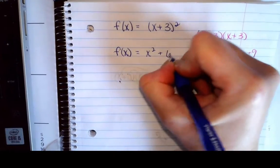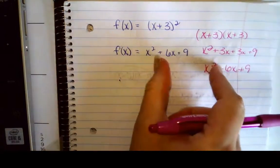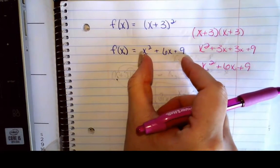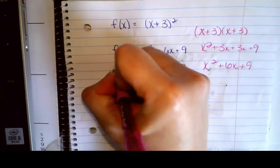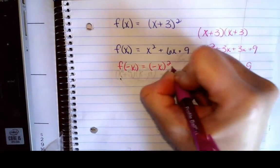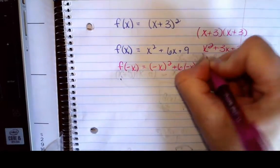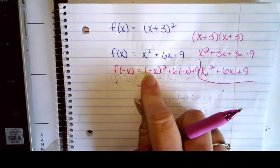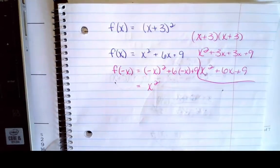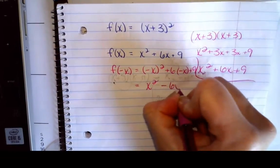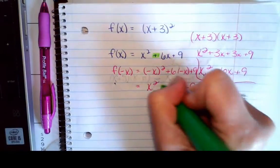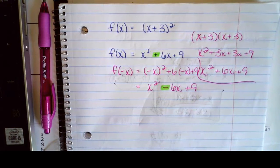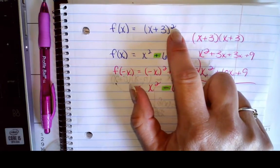To test for evenness, I substitute in a negative x and need to get the exact same thing back. So I get negative x squared plus 6 times negative x plus 9. Simplifying: negative x times negative x is x squared, 6 times negative x is negative 6x, and plus 9. So that middle sign changed. For it to be even I needed the exact same thing back, and I didn't get it. So this is not even. Don't look at this and say 'it's an even exponent, so it must be an even function' — that's where we got the name, but it doesn't work that way.